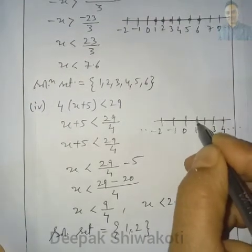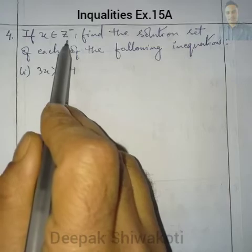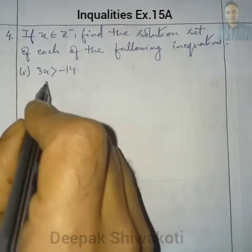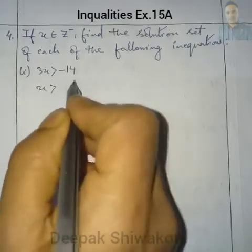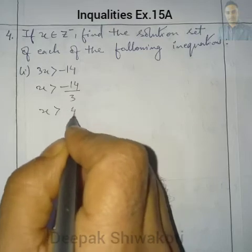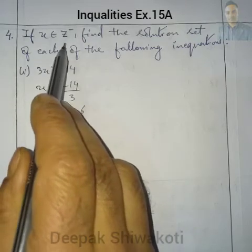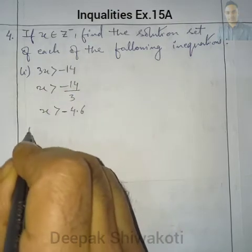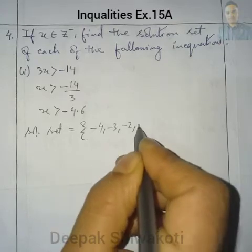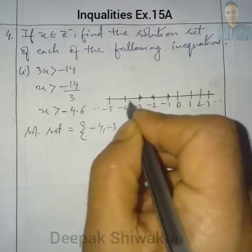Number 4: where x belongs to Z- (negative integers), find the solution set. Question 1: 3x > -14. Dividing each side by 3: x > -14/3, which is approximately x > -4.6. From negative integers, the solution set is {-4, -3, -2, -1}. On the number line, we mark -1, -2, -3, and -4.